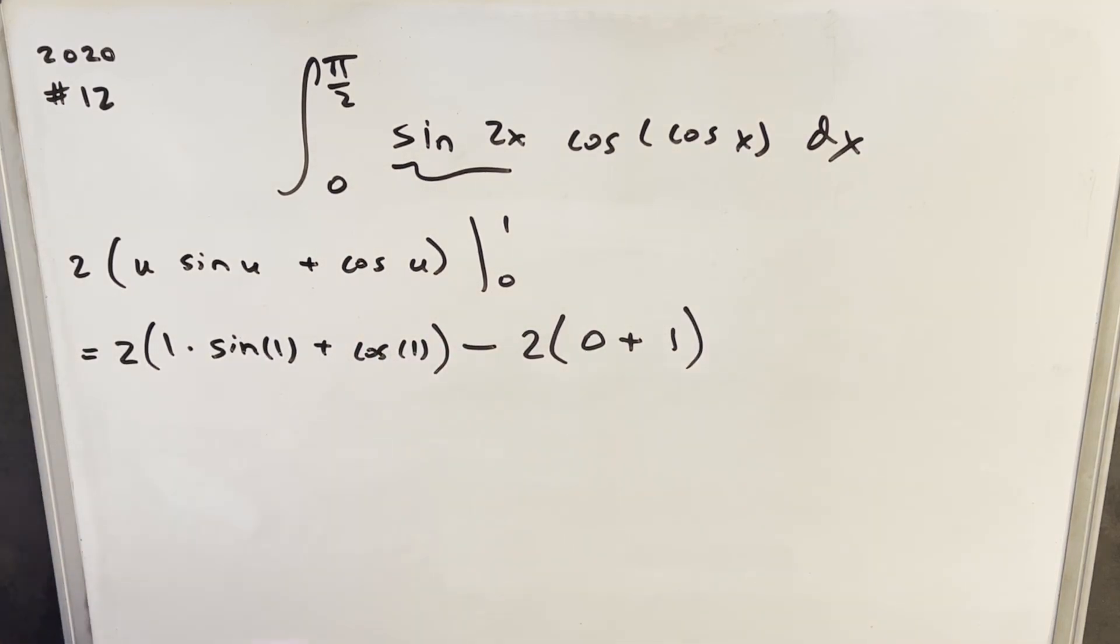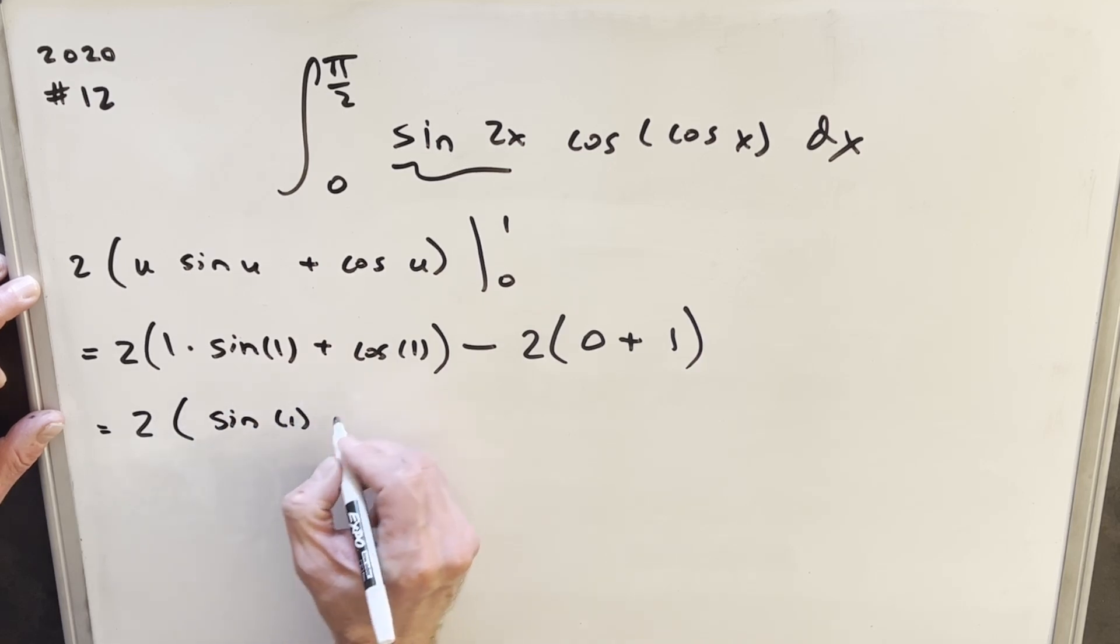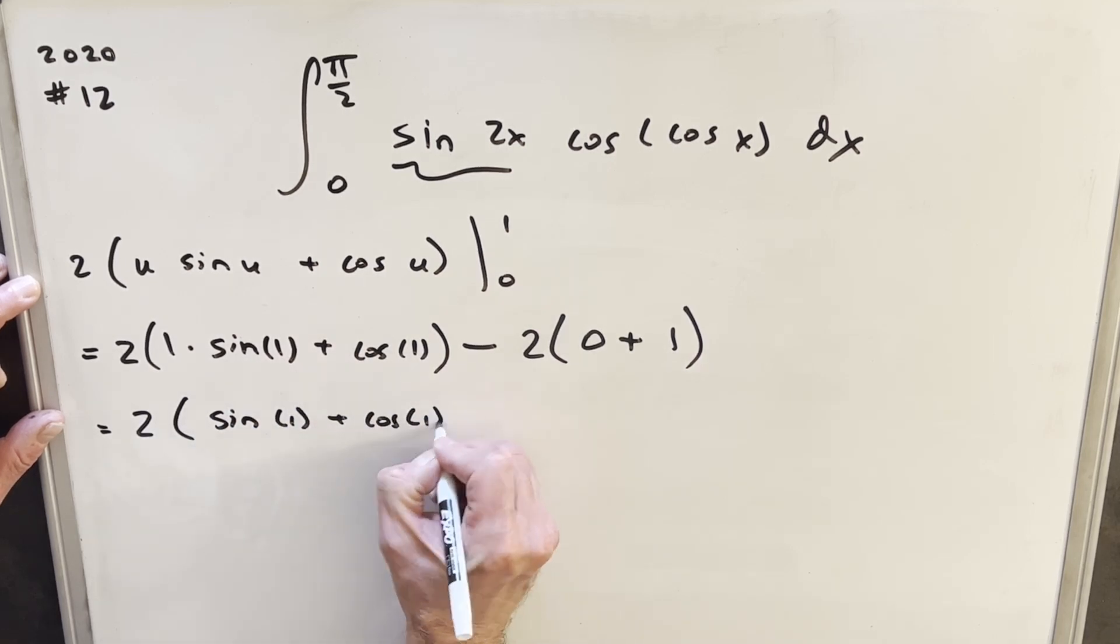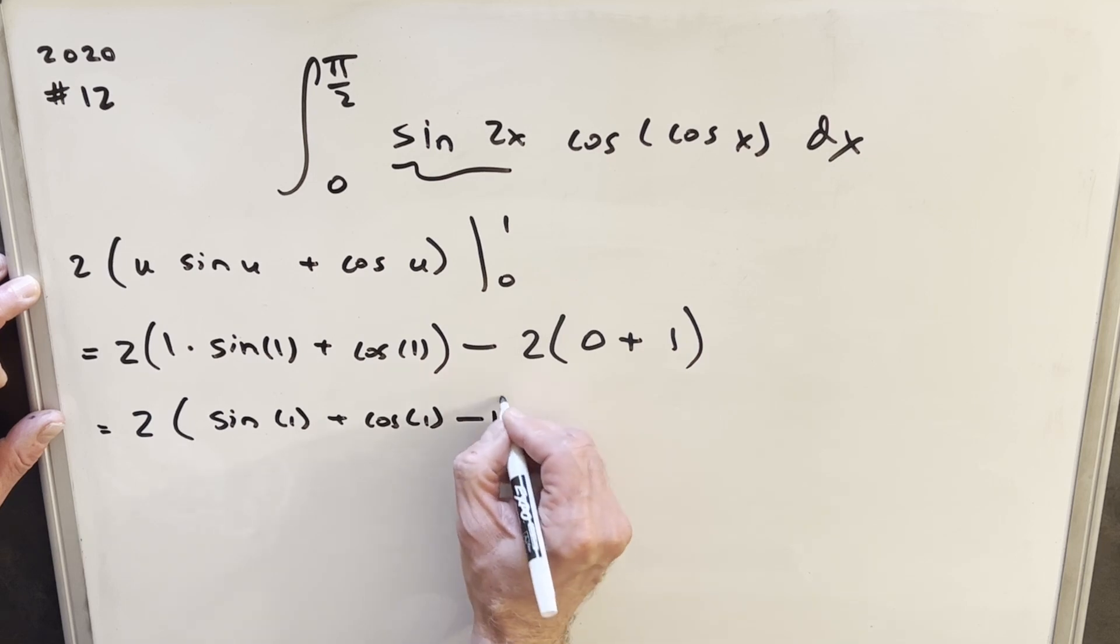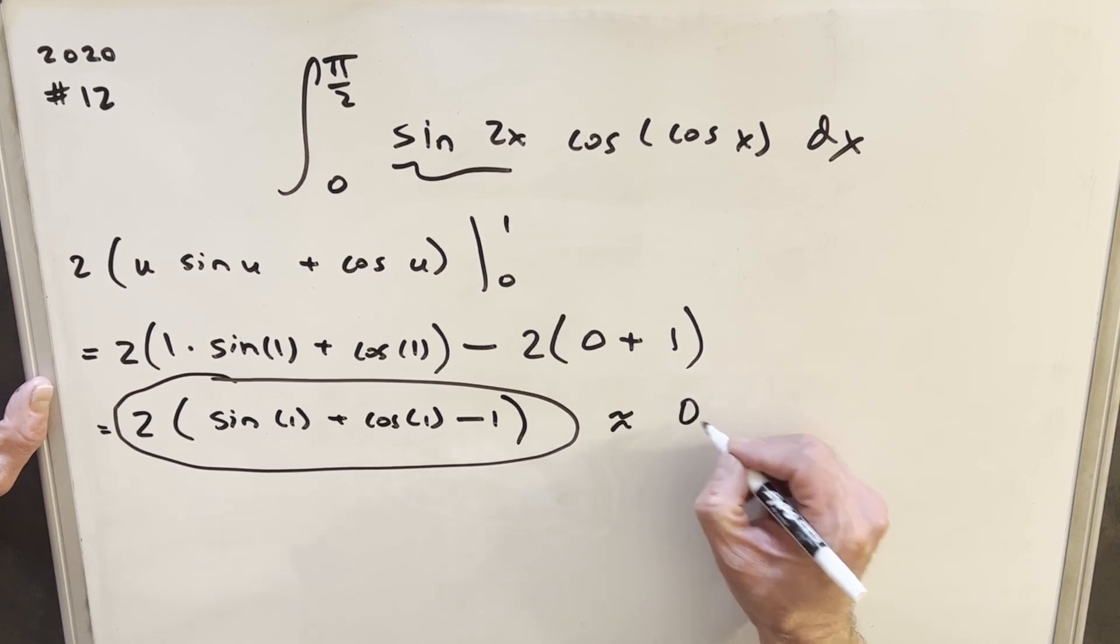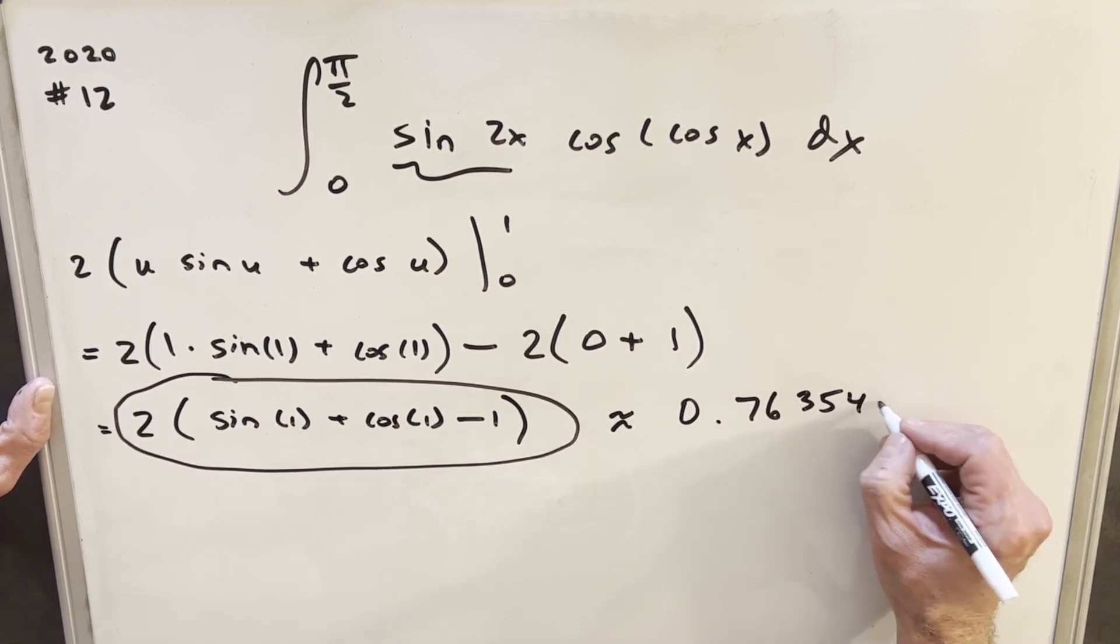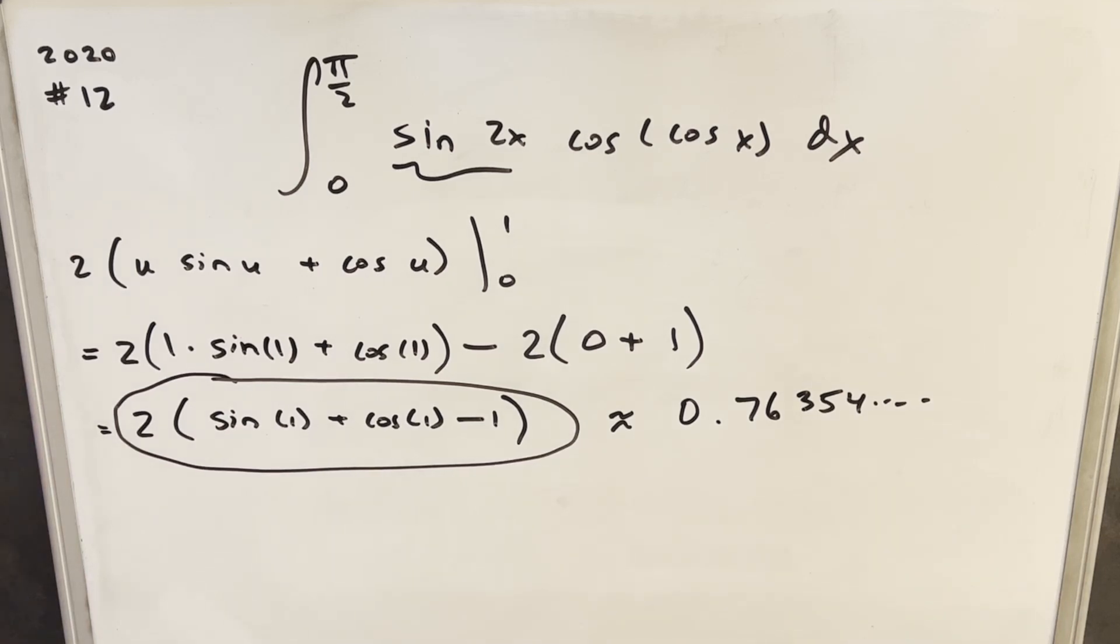Now we're almost done. I think we've just cleaned up a little bit. What I'm going to do is I'm just going to factor a 2 up as we have a 2 here and a 2 here. So we'll write our final solution as 2 times sine of 1 plus cosine of 1 minus 1. So I put this in a calculator just to get an approximation. And I had something like 0.76354, etc. This sine of 1 and this cosine of 1 is going to give you a big decimal answer and you just have to multiply it all the way out and you get something like that.